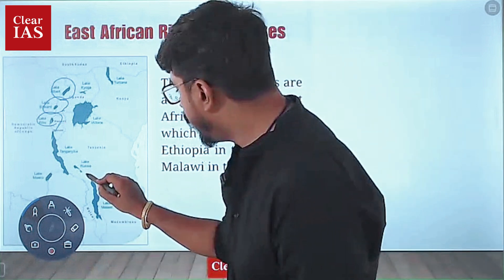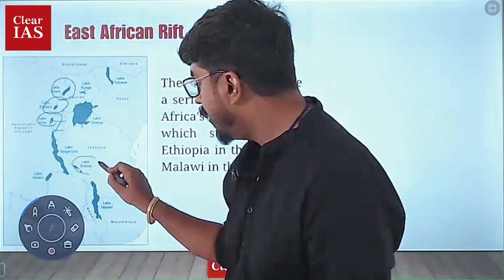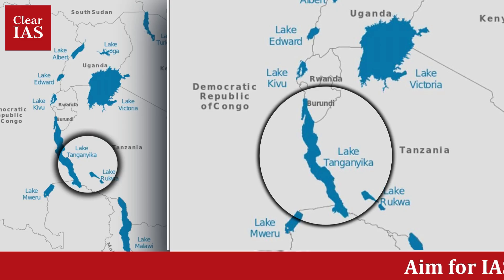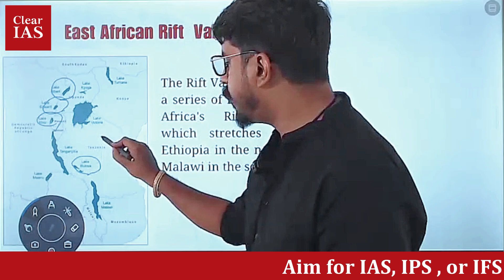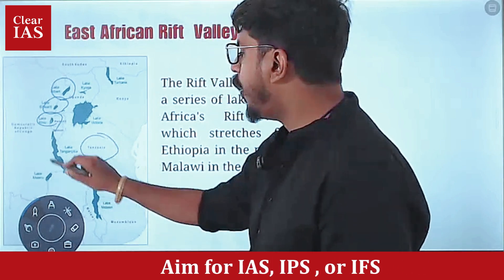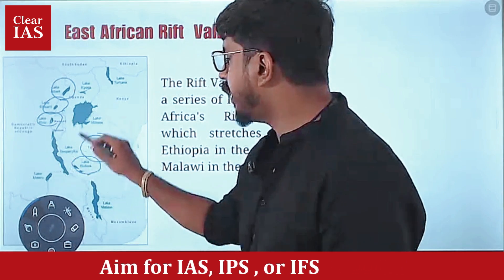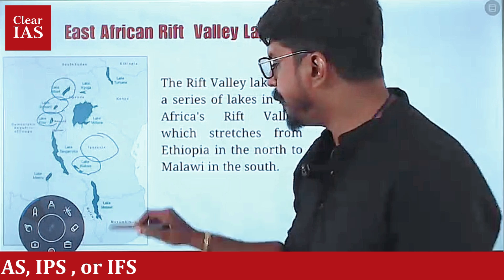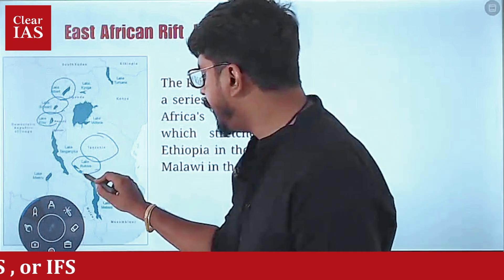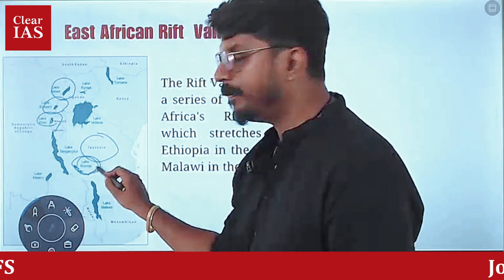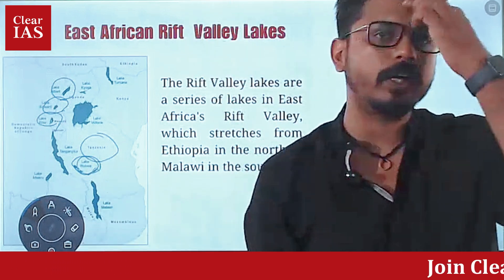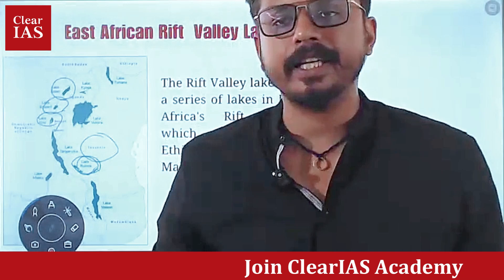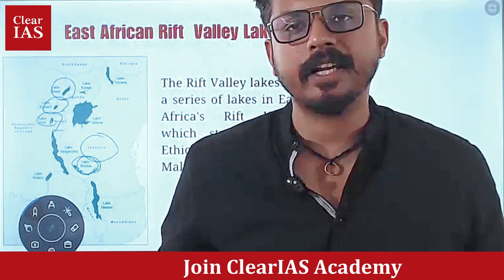And Lake Rukwa — this is the only lake which lies completely under one country: Tanzania. All other lakes straddle more than one country. So a peculiarity of Lake Rukwa is that it lies completely in Tanzania.